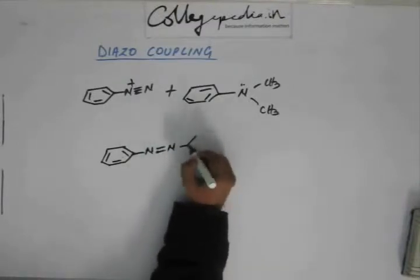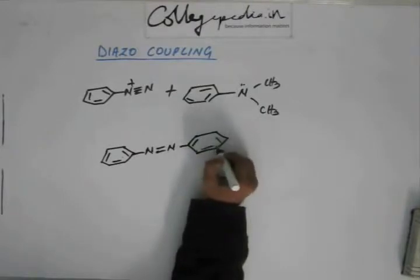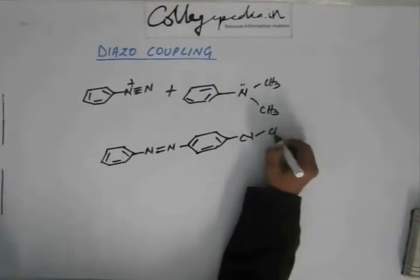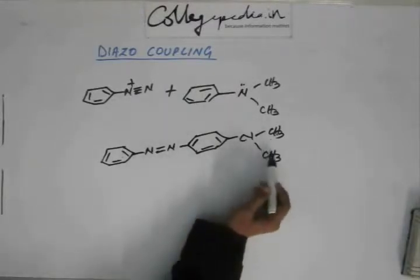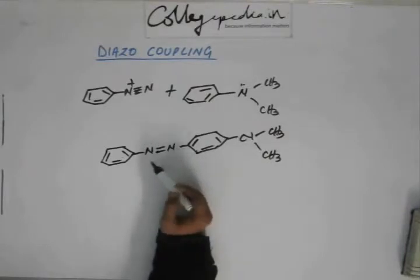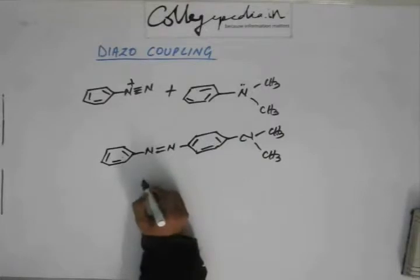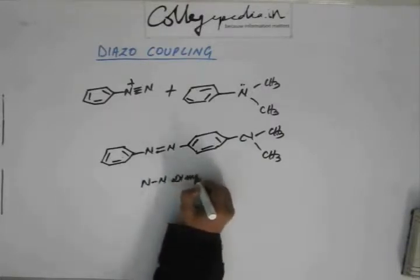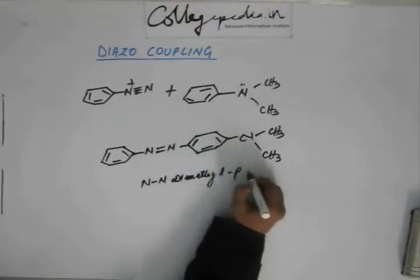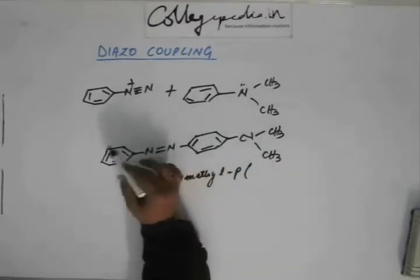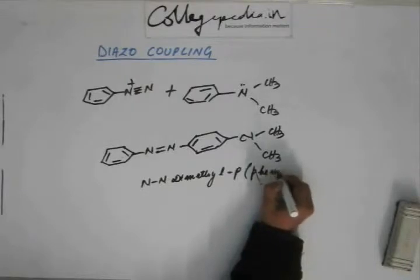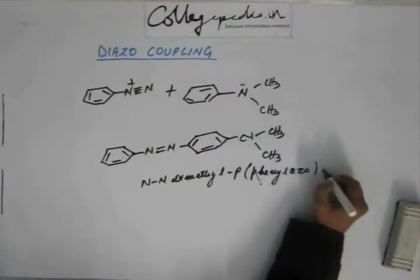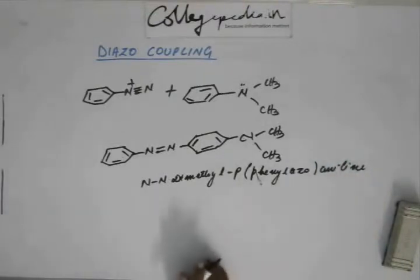The product will look like this. In this coupling reaction, you just have to identify what the final azo compound is going to look like. This is what the final azo compound is going to look like. This is N,N-dimethyl para-phenyl azo aniline — named as N,N-dimethyl para because at the para position you have phenyl — and this happens to be yellow in color.